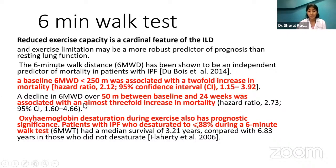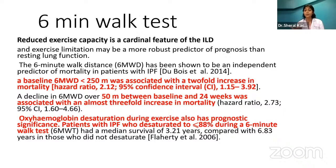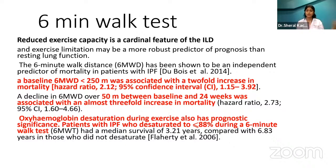A baseline six-minute walk distance of less than 250 meters was associated with a two-fold increase in mortality — that's how important the six-minute walk test is. Do it on a follow-up basis, maybe after three months. A decline in six-minute walk distance is significant: sometimes the patient's oxygen saturation may go down but their walk distance has improved — meaning peripheral conditioning and functional capacity are improving even as lung progression continues. When both distance decreases and oxygen drops, that's the time to ask the patient to consult the physician. Oxygen-hemoglobin desaturation during exercise also has prognostic significance: patients with IPF who desaturate to less than 88% during six-minute walk test had a median survival of 3.21 years.